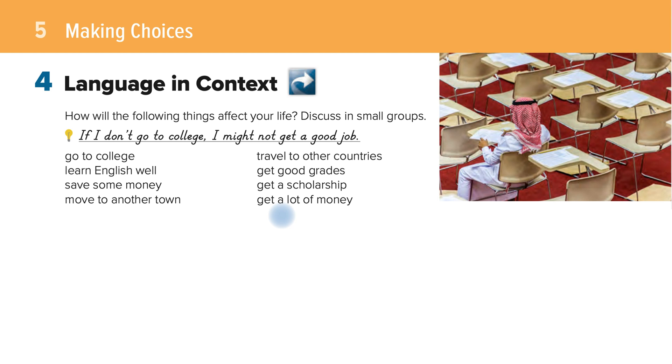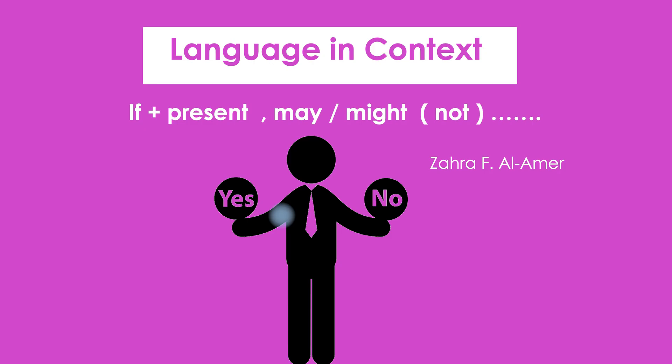For example: if I get a lot of money, I might buy a house. If I save money, I might buy a new cell phone. If I travel to other countries, I may learn about different cultures. You're going to formulate sentences using this pattern: if + present + may or might.